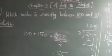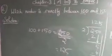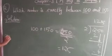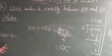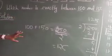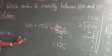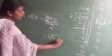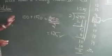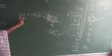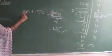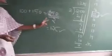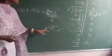You may also verify by listing those numbers — 100, 101, 102, 103... up to 149 — and finding the exact middle number by counting. But that is a long process. So for this, simply add the given two numbers and divide by 2 to get the middle number.